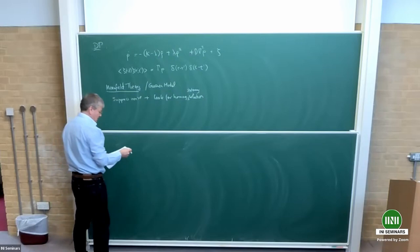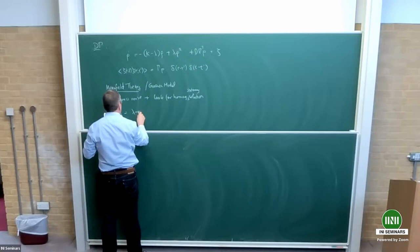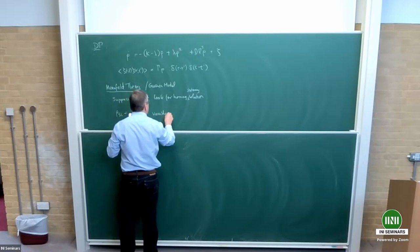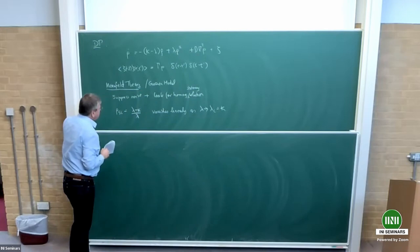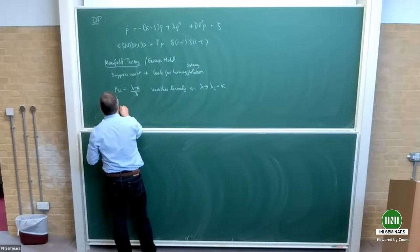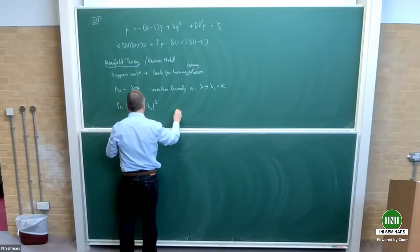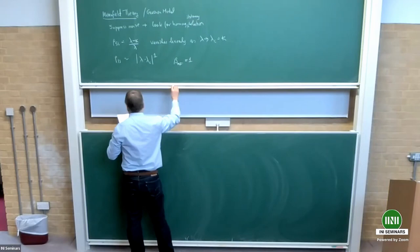You say there's some average density, and solve in steady state. So rho steady state equals Lambda minus Kappa over Lambda. This vanishes linearly as Lambda tends to the critical value Lambda_C, which equals Kappa at this level. So rho steady state asymptotically goes like Lambda minus Lambda_C to the power one. In mean field theory the exponent beta, which I defined last time, is equal to one.